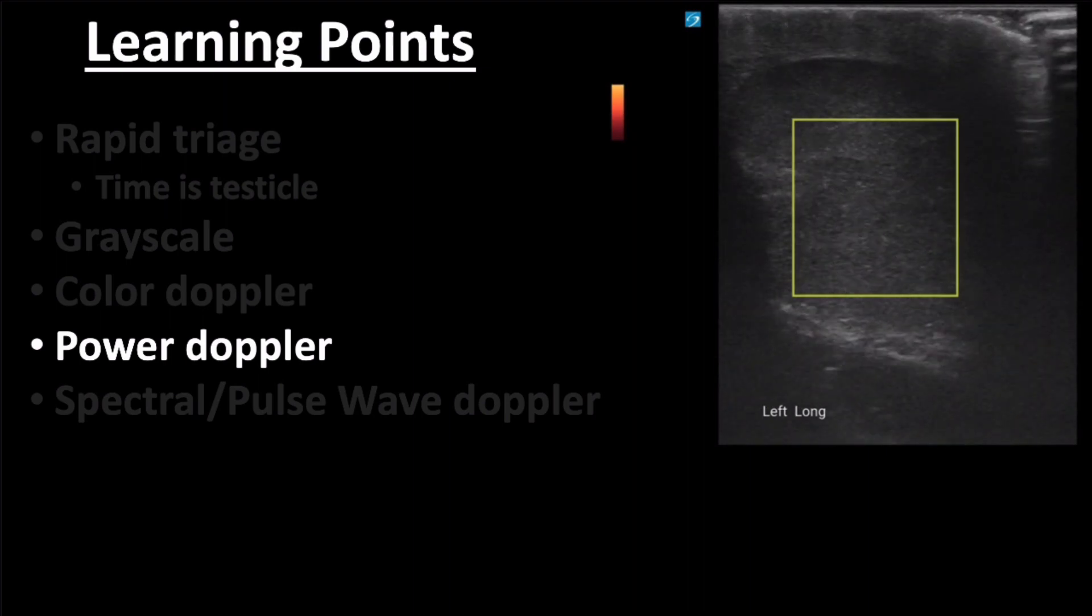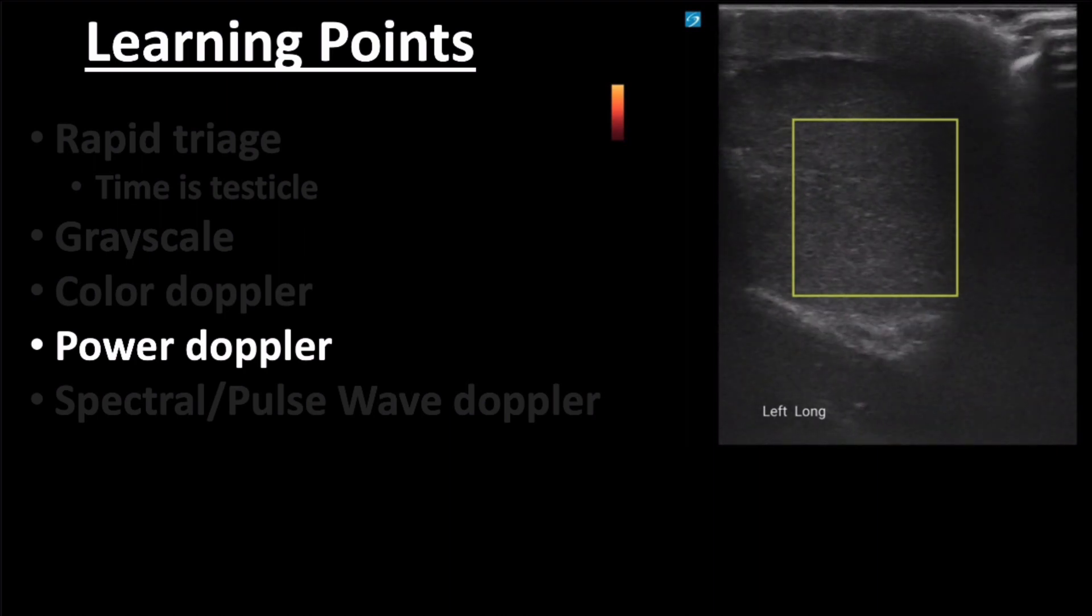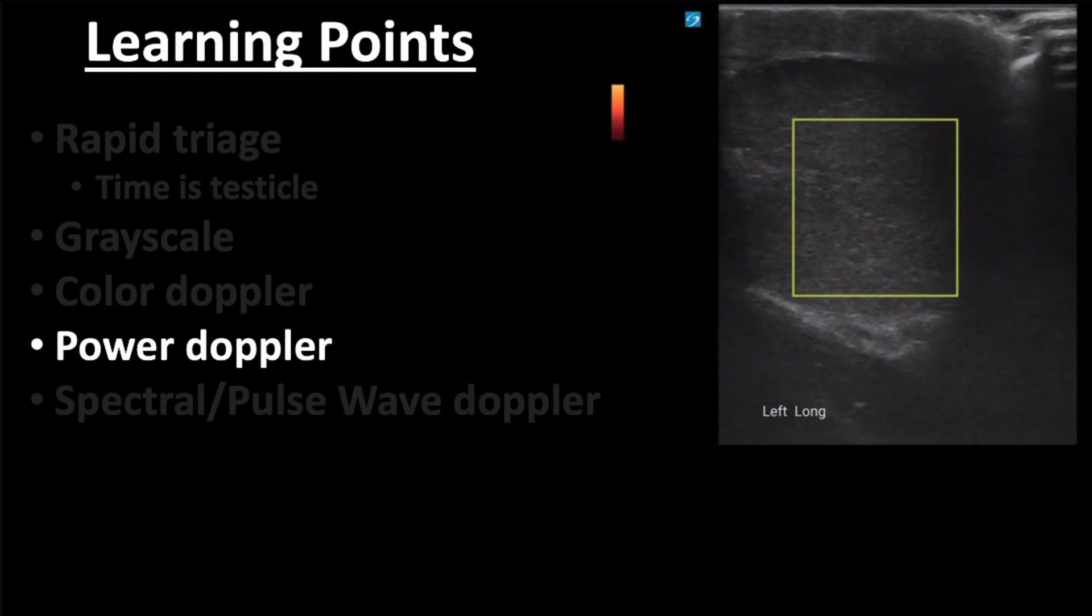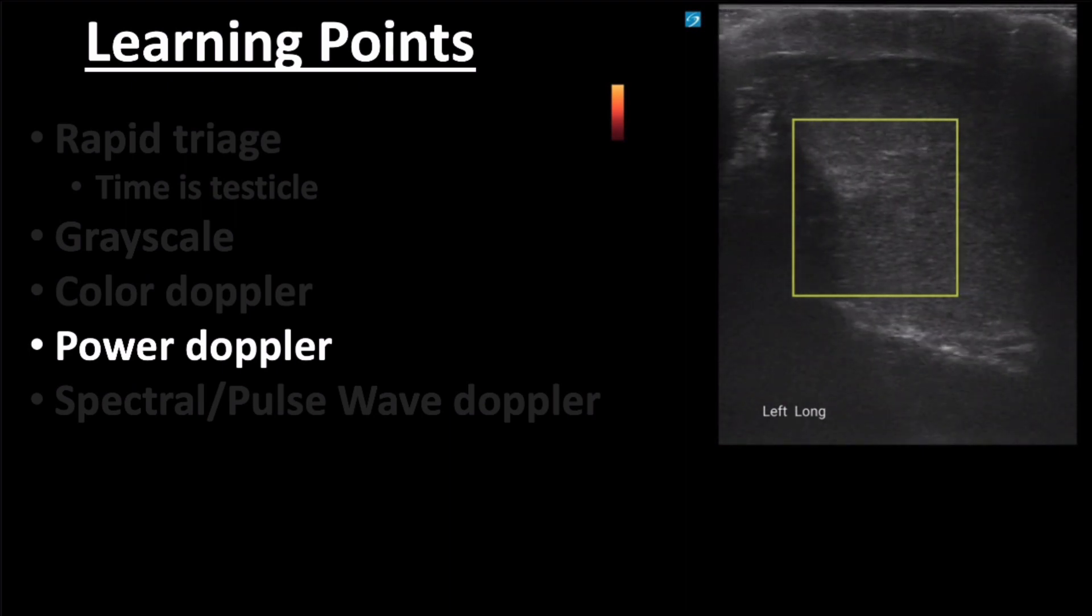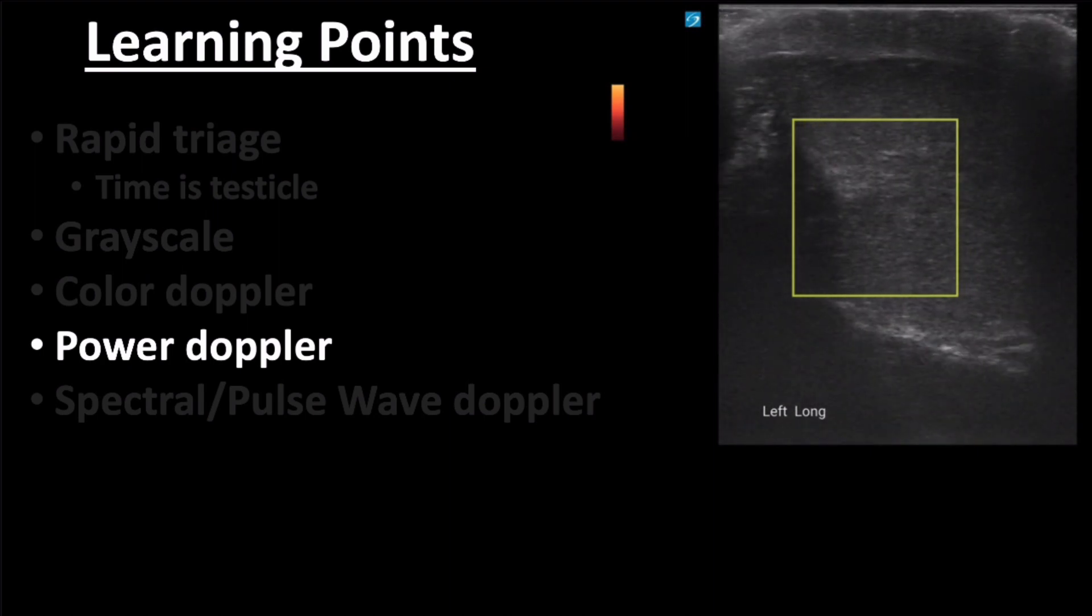Unlike color Doppler, which assigns color based on flow either toward or away from the probe, power Doppler is traditionally direction insensitive, which is one reason it displays increased sensitivities for detecting flow. Many advocate for it to be the mode of choice when evaluating for flow given its reported increased sensitivity.